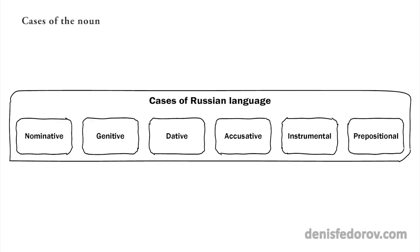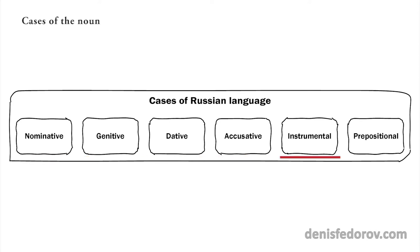Now, general information about Russian cases. Cases show the role that a noun plays in the sentence. There are six cases in Russian: nominative, genitive, dative, accusative, instrumental, prepositional.